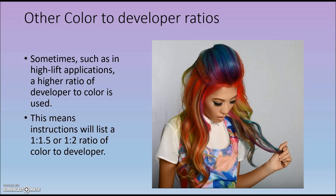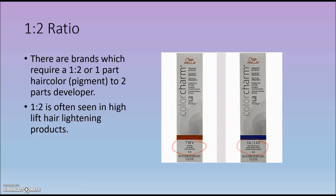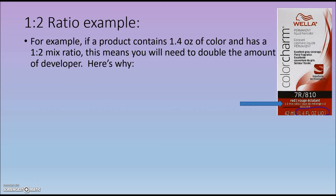Sometimes, such as in high-lift applications, a higher ratio of developer to color is used. You may see ratios of 1 to 1 and a half or 1 to 2 color to developer. There are brands which require 1 to 2, meaning 1 part hair color to 2 parts developer. The 1 to 2 ratio is often seen in high-lift hair lightening products. Let's look at an example of a product that contains 1.4 ounces of color with a mixed ratio of 1 to 2.